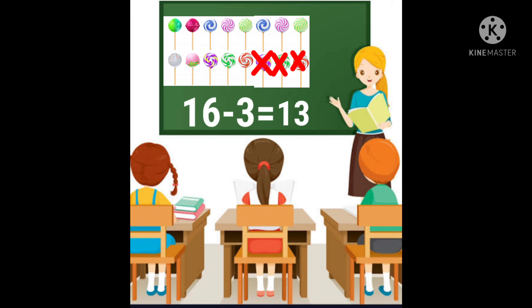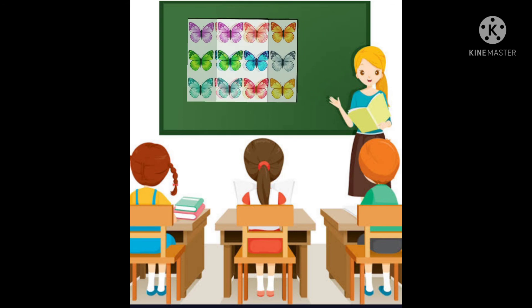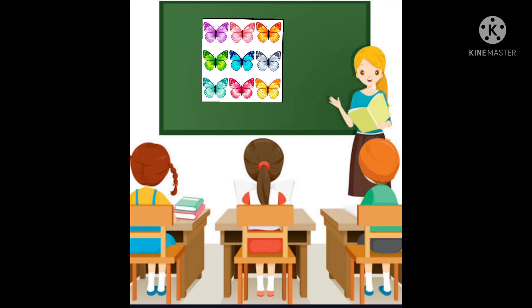Let us take one more example. Here we have 9 butterflies. Here the question is 9 minus 6. Children, we want to cross out 6 butterflies. 1, 2, 3, 4, 5, 6.